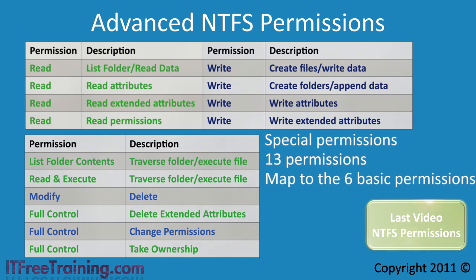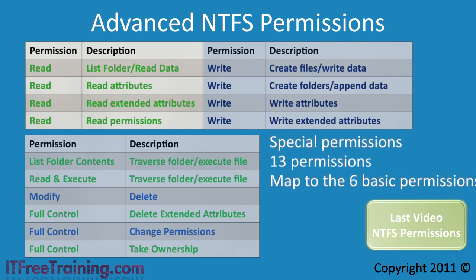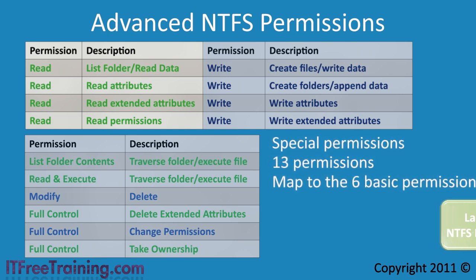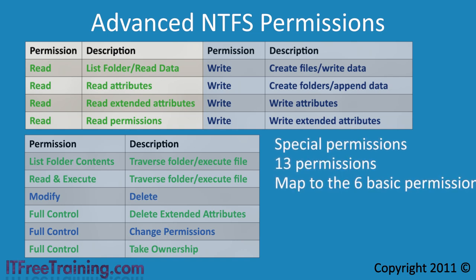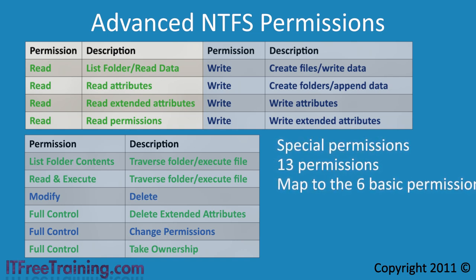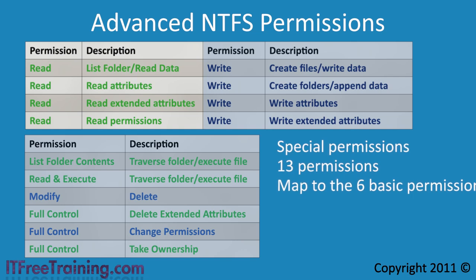First you have the read permission. When you assign the read permission to a file or folder, you are essentially assigning it the following 4 permissions. The first permission is list folder read data. If applied at the folder level, it will allow you to see the file name of any file or folder regardless of the permissions on that file or folder.